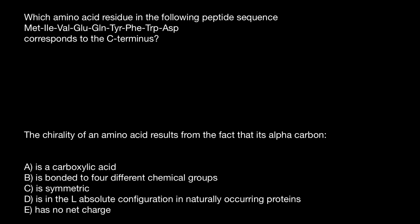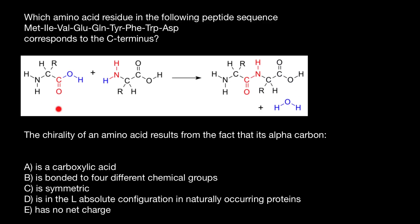The first question is: which amino acid residue in the following peptide sequence corresponds to the C-terminus? We see here one amino acid, another amino acid. Each amino acid has an amino group and a carboxylic acid group. When two amino acids join through a peptide bond, they form a dipeptide. A peptide is just a sequence of amino acids. Each sequence of amino acids is going to have an N-terminus and a C-terminus. The first amino acid is going to have the N-terminus, and the very last is going to have the C-terminus.